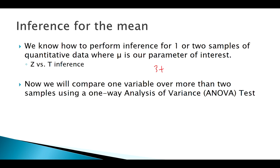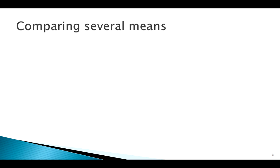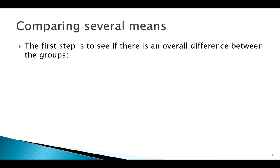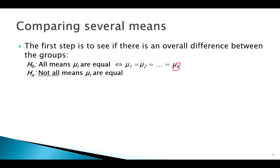When we're comparing several means, we're interested in whether all the group means appear to be the same, or if there's some difference. Our null hypothesis assumes they're all equal. You can write this as all means equal, or if you want to write them all out, with K being your number of groups, you can do that. The alternative is that not all means are equal.